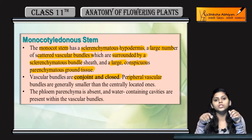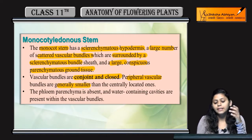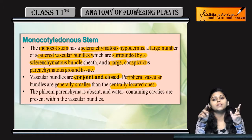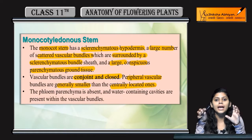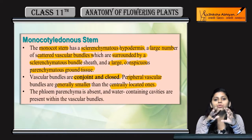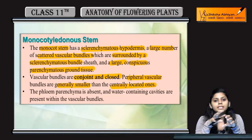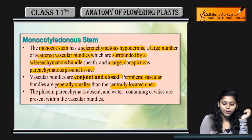Peripheral vascular tissue — those present at the periphery — are generally smaller than the centrally located ones. The xylem and phloem present at the periphery are smaller in size compared to the xylem and phloem scattered at the center. Central xylem and phloem are larger in size, and peripheral ones are smaller in size.